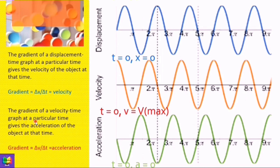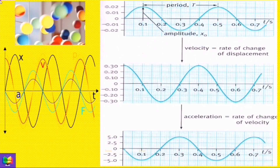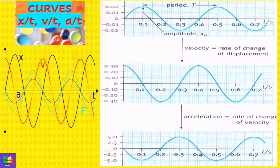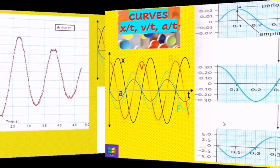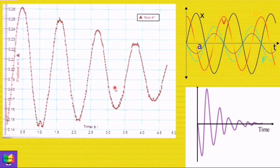On the next page, the three idealized graphs — displacement against time t, velocity against time t, and acceleration against time t — are shown together. It is clear that all three graphs follow the same general sinusoidal form. The graphs are also shown combined on the same axis: x represents the displacement-time graph, v the velocity-time graph, and a the acceleration-time graph.